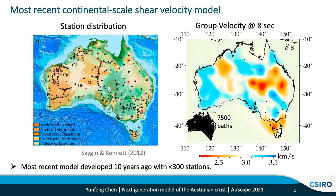The most recent continent-scale model of the Australian continent was developed almost 10 years ago by Zhejiang and Kinnett in 2012. The figure shows the station distribution used in their study, which contains less than 300 stations. The red figure shows the 8-second group velocity map constructed using the ambient noise imaging method, constructed from about 7,500 ray-paths. The velocity variation is kind of smooth across the entire continent, and the large-scale structures are relatively well-constrained. However, the lateral resolution is still far from ideal — about 300 kilometers or so.